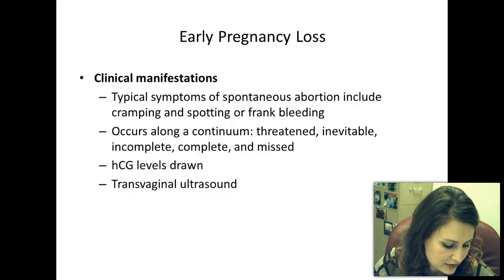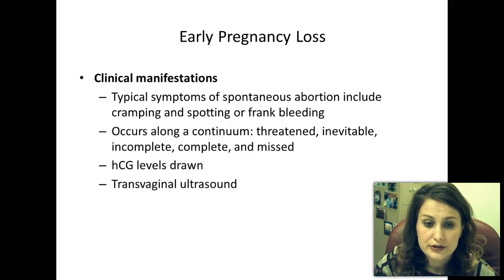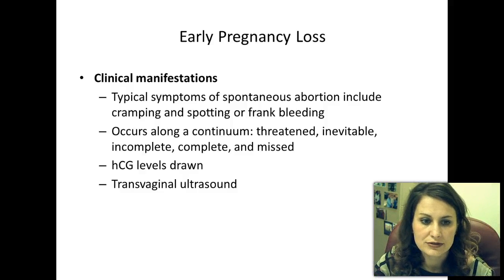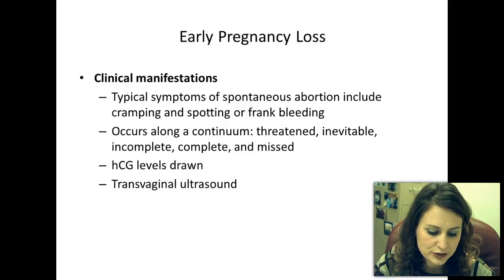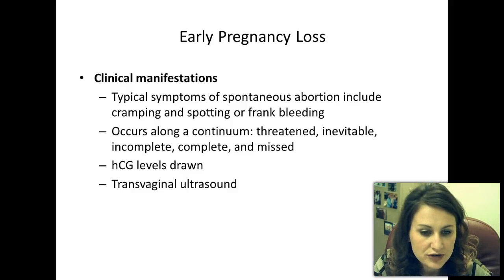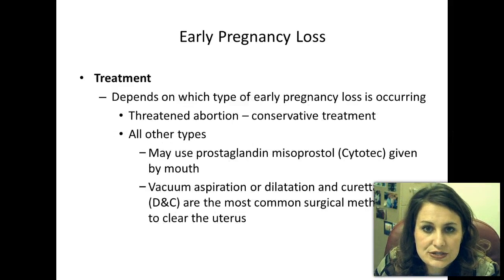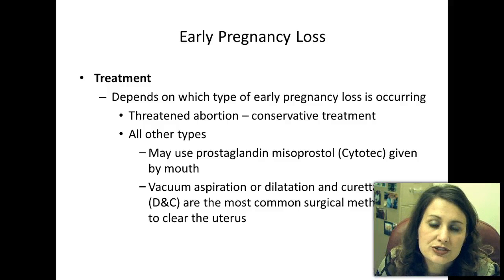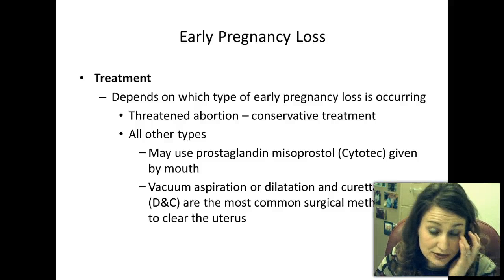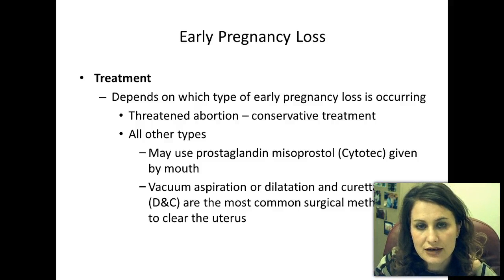Clinical manifestations: typical symptoms include cramping and spotting or frank bleeding. Spontaneous abortion occurs along a continuum—threatened, inevitable, incomplete, complete, and missed. (Table 17-1 on page 385 goes into more detail.) HCG levels will be drawn and a transvaginal ultrasound will be done. Treatment depends on which type of early pregnancy loss is occurring. For a threatened abortion, a conservative wait-and-see approach is taken: bed rest and pelvic rest to see if the pregnancy can continue.